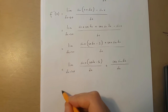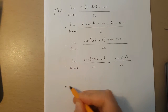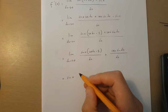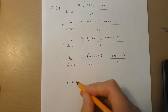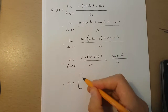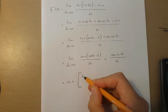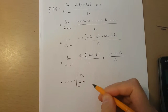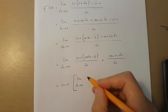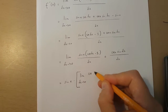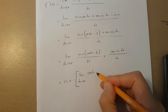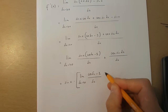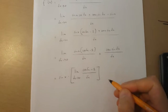Now, this is the same as sin x multiplied by, in the limit, as change in x approaches 0, cos change in x minus 1 over change in x,